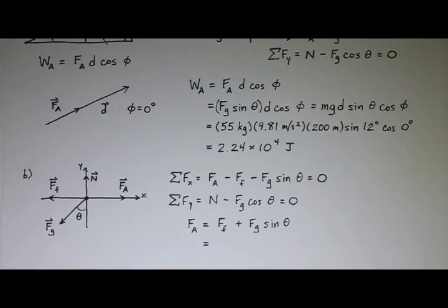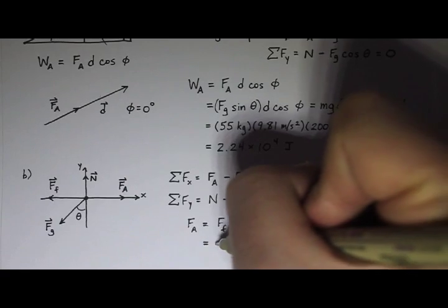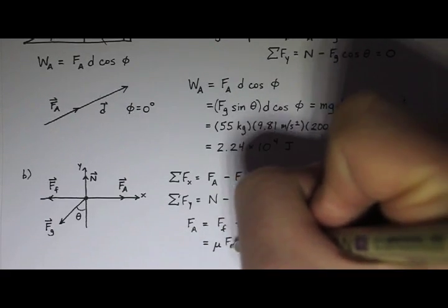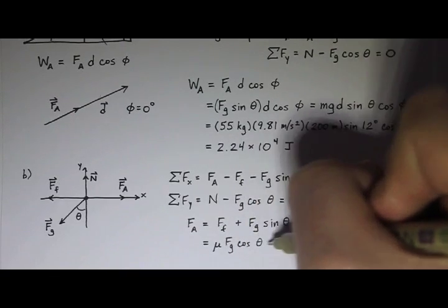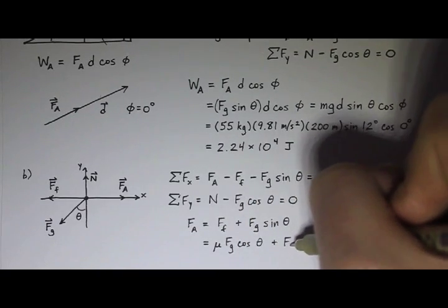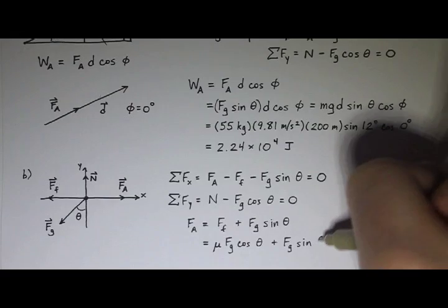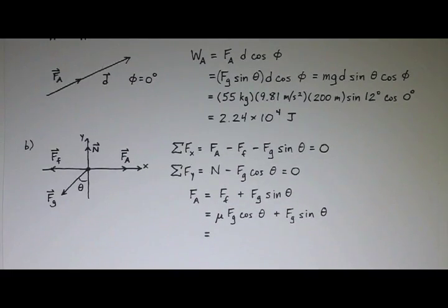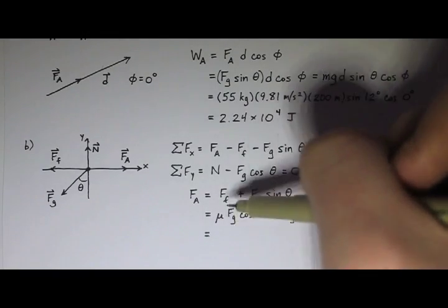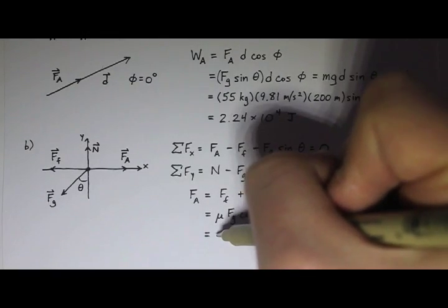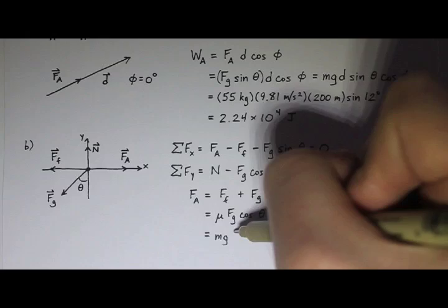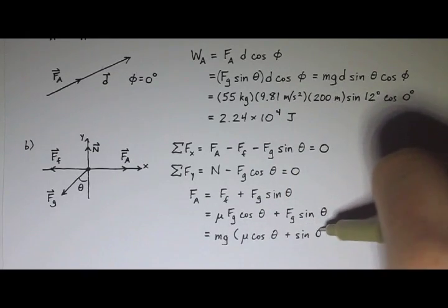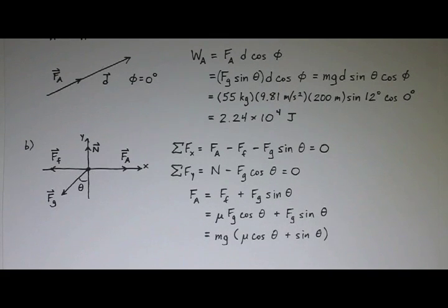I can solve for that. The force of friction is mu times the normal force, and the normal force is Fg cosine theta. So the applied force equals mu times Fg cosine theta plus Fg sine theta. Factoring out F sub g — written as mg — the applied force equals mg times (mu cosine theta plus sine theta).